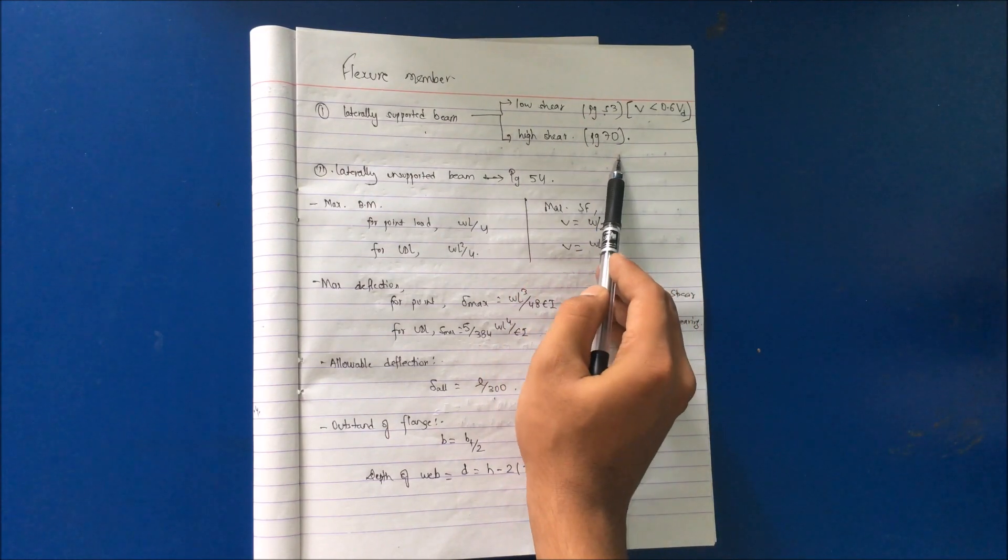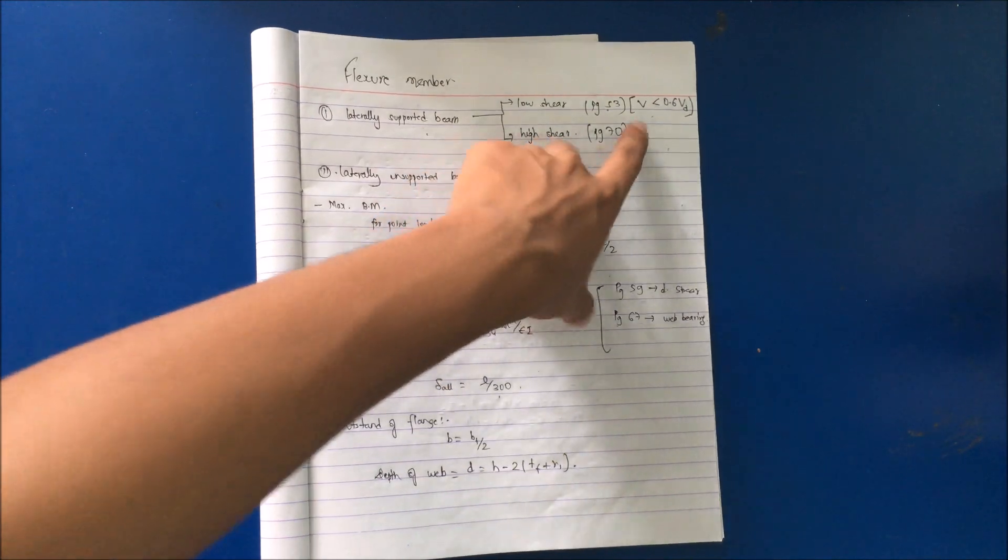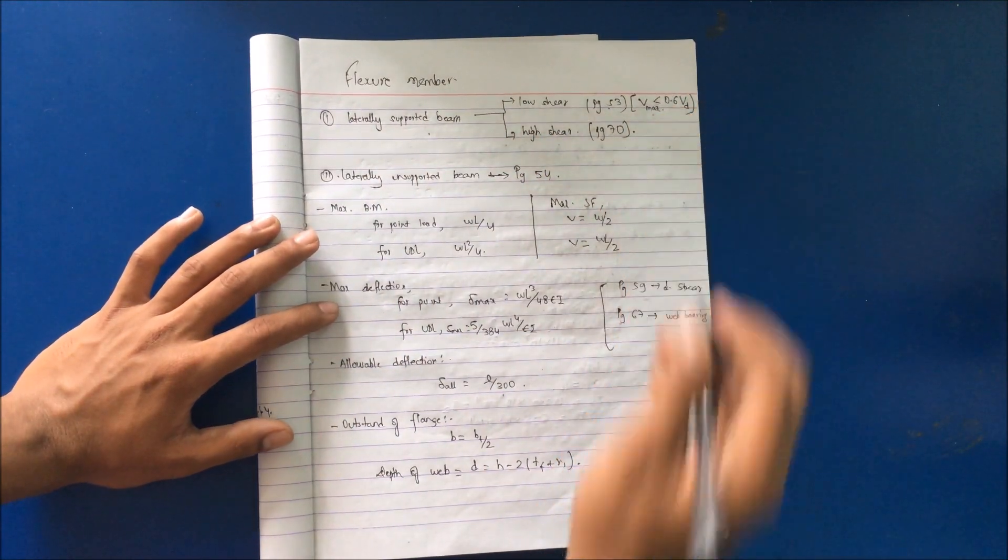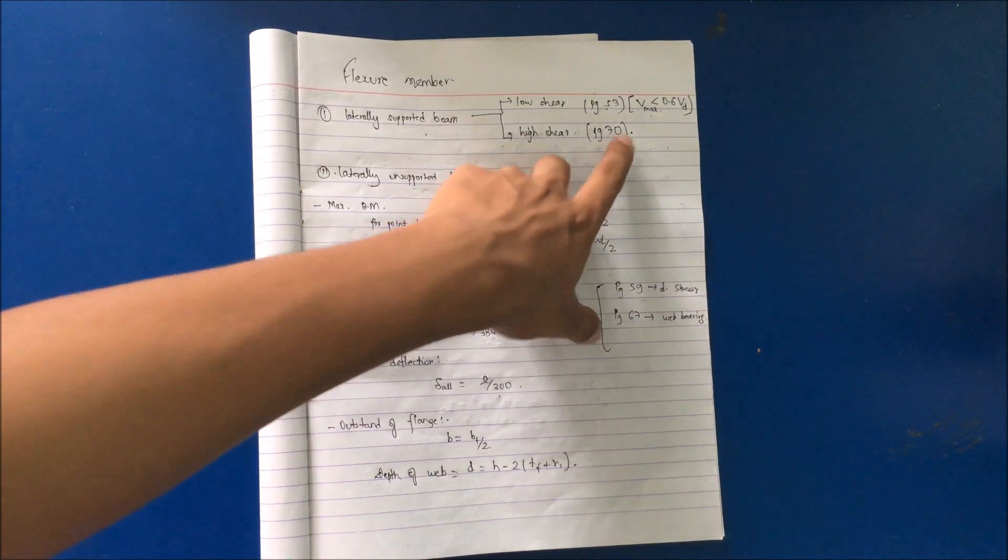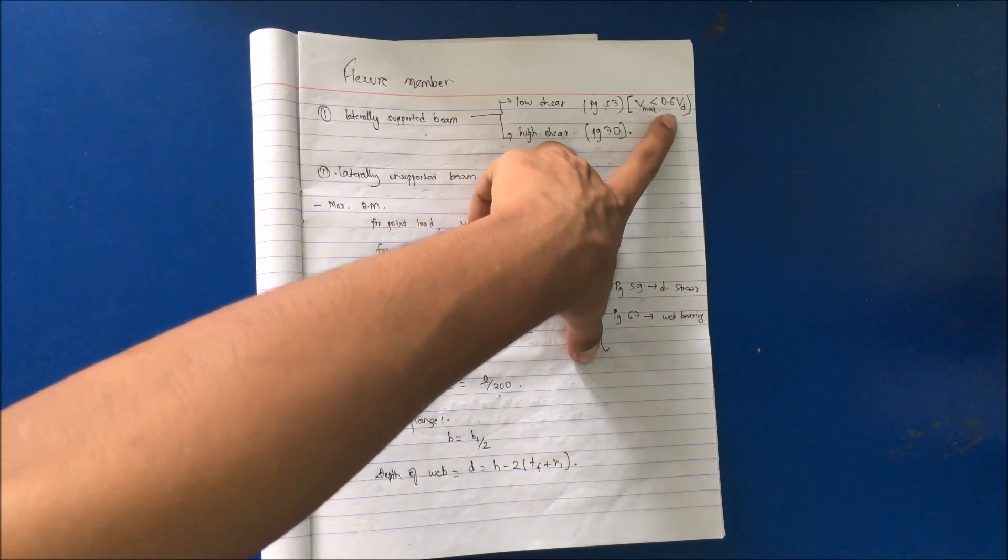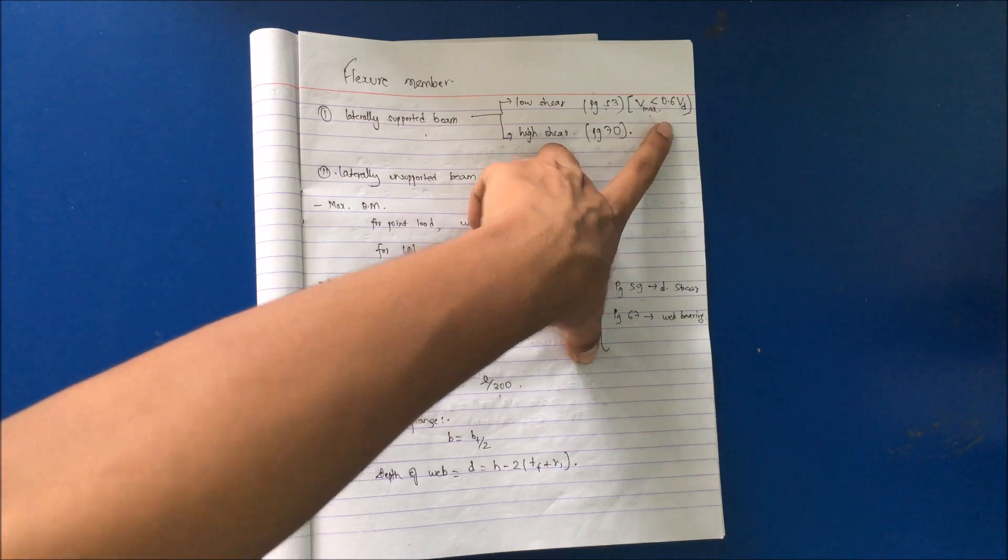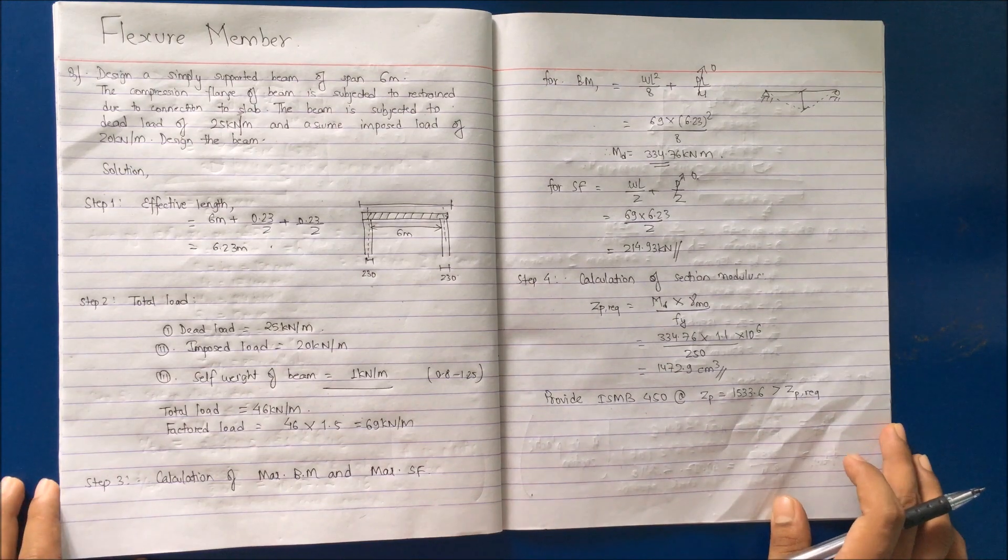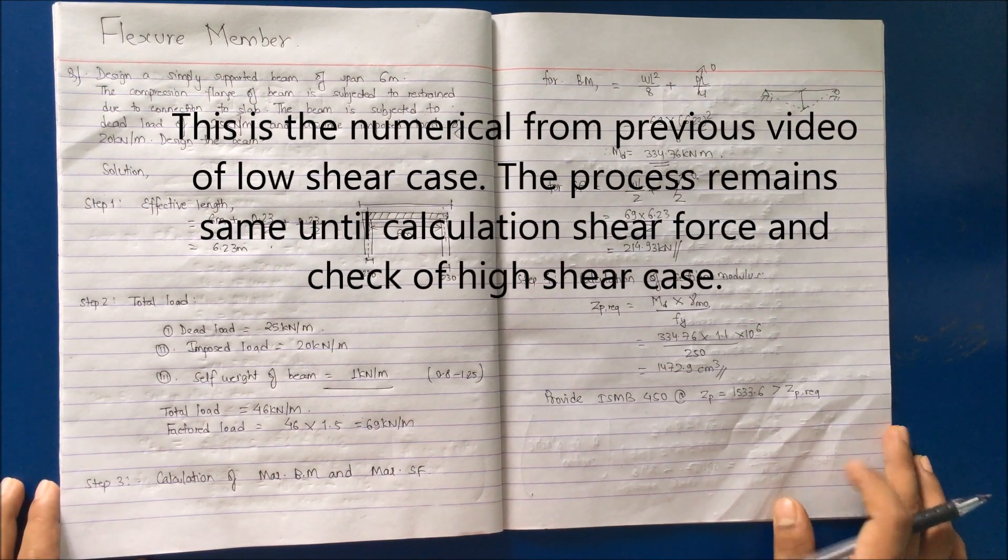For high shear, you will go to page number 70. The condition for low shear and high shear is that Vmax, the maximum shear force, should be less than 0.6 times the design shear force. For the case of high shear, the procedure will be the same.